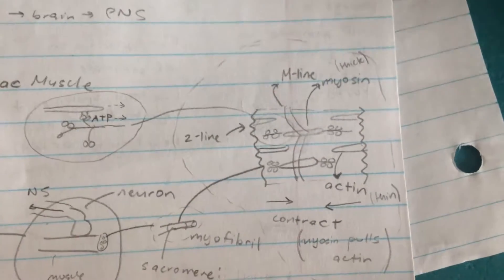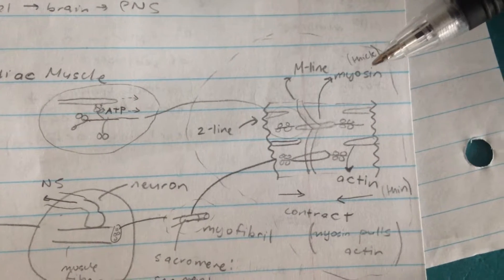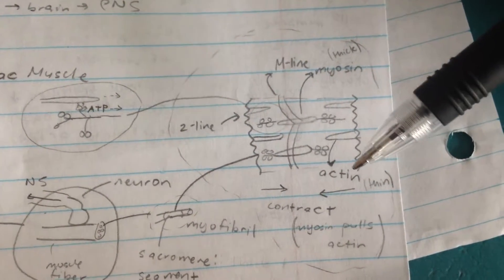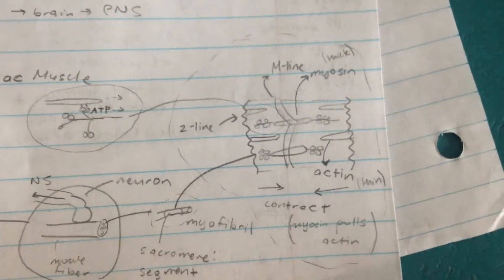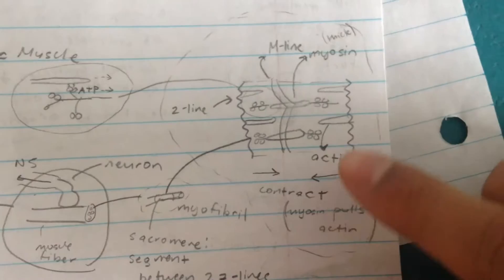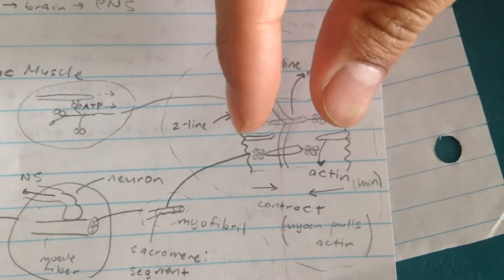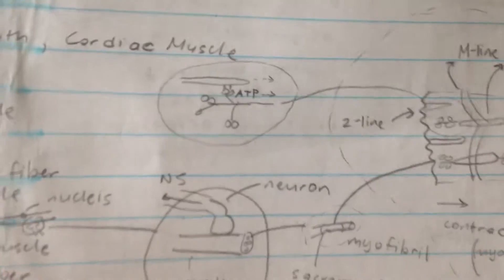Basically, the thick filament myosin uses ATP to pull the actin filaments closer to it. You can see here that these two Z lines are going to contract and get closer together. That's how a muscle contracts.